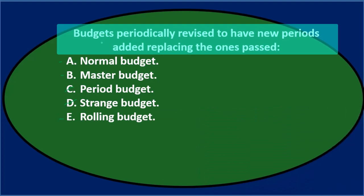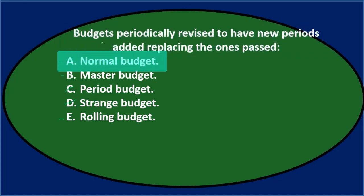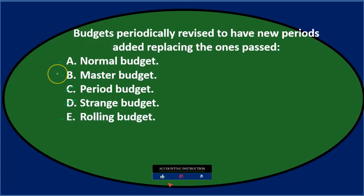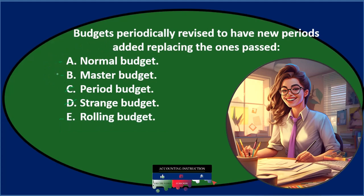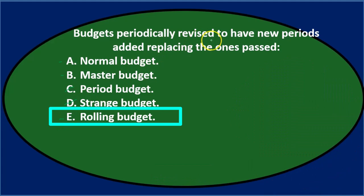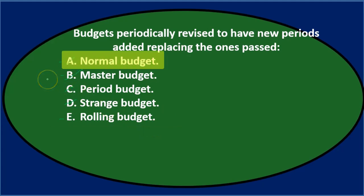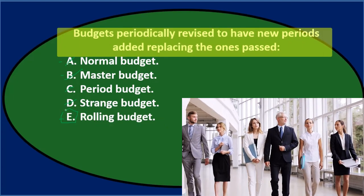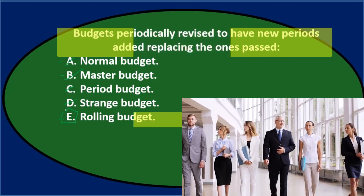Budgets periodically revised to have new periods added, replacing the ones past — either A, Normal budget; B, Master budget; or E, Rolling budget. Note that the normal budget and the master budget are kind of similar — the master budget is the normal kind of budgeting process. E, the Rolling budget, is the one that's a little bit different and sounds like what's happening here: we're going to have budgets periodically revised to have new periods added, replacing the old ones. The normal budget is the static yearly budget broken down into quarters and months. The rolling budget is the one where you're always looking out into the future — the headlights are always basically a year out because we keep rolling forward. Final answer: E, Rolling budget.